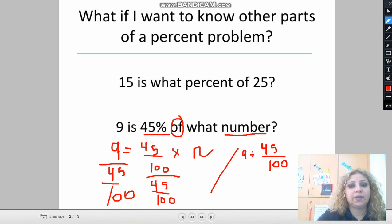As you see here, I am dividing fractions. Let's write the whole number as a fraction. So I'm going to use the KFC method. Keep the first fraction the same and change division to multiplication. 9 over 1 times, and flip the second fraction, 100 over 45.